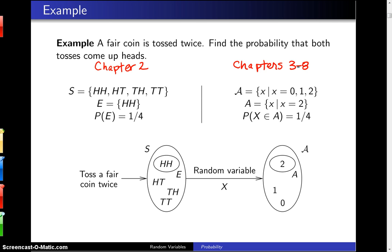Now on the left you have the sample space for this particular random experiment as heads-heads, heads-tails, tails-heads, and tails-tails. The event of interest is heads-heads, and because this is a fair coin all four of those outcomes are equally likely. So the probability of the event E, which is tossing two heads, is one-fourth.